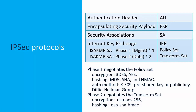AH is waning in popularity because, although it can provide the ability to authenticate data origin and verify the integrity of the data that it wasn't changed in route, it doesn't provide confidentiality or encryption. Authentication Header also doesn't work with NAT firewalls — it can't traverse network address translation. Encapsulating Security Payload, or ESP, does provide confidentiality through encryption, and it can provide authentication methods like integrity checks. ESP is more popular because of those reasons.